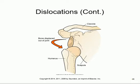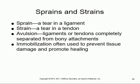Sprain and strain are both tears but in different structures. A sprain is a tear of a ligament; a strain is a tear of a tendon. Avulsion is a complete cutting of the ligament, not just a partial tear. If the ligament is affected, you ask: is it a sprain (partial tear) or an avulsion (complete cut)?